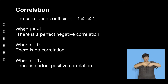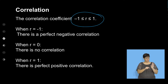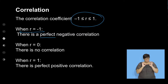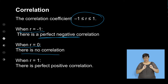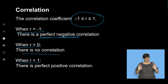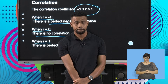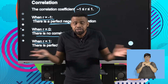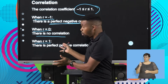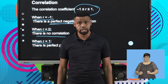The correlation coefficient is between minus 1 and 1. When R is negative 1, there is a perfect negative correlation. When R is 0, there is no correlation — no relationship between the two variables. And if R is 1, there is a perfect positive correlation. Minus 1: perfect negative. Zero: no correlation, no association. One: perfect positive correlation between the two variables.